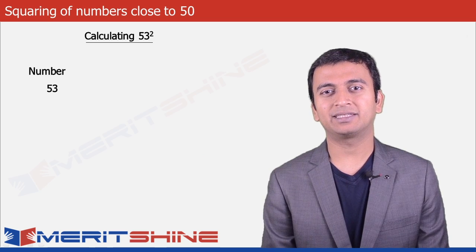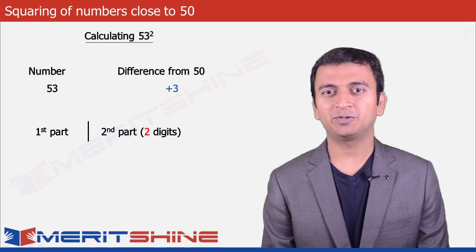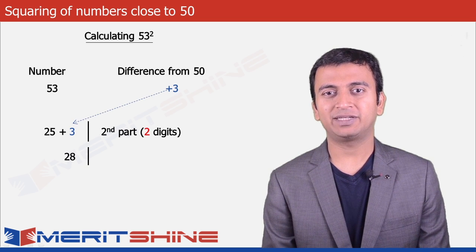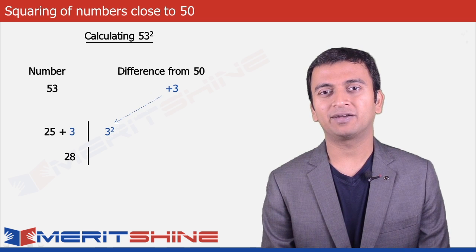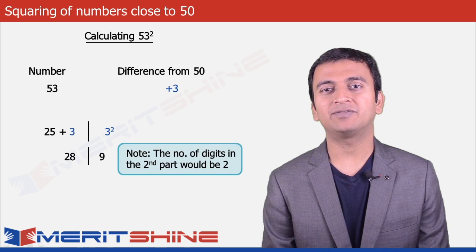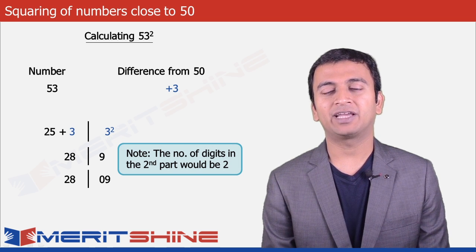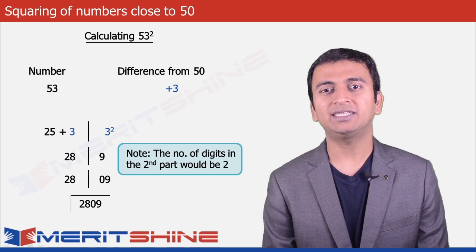Let us take 53 as an example. Here the difference from 50 would be plus 3. The first part would be 25 plus 3 which is 28, and the second part would be the square of the difference, which is 3 squared, giving us 9. We have to remember that the second part will always have two digits, so we will have to add an extra 0 in front of 9 making it 09. We can now club these two parts and get our final answer as 2809.